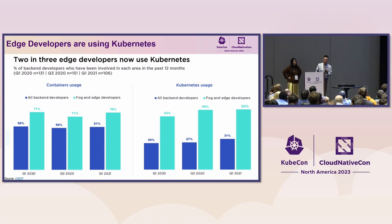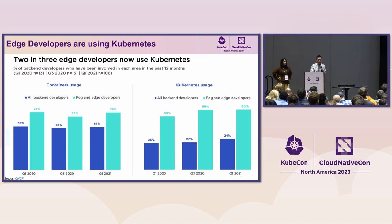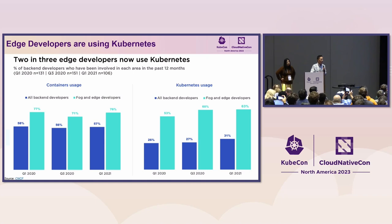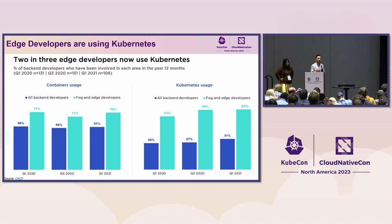Continuing on edge developers using Kubernetes — this is a survey done in 2021 by CNCF. It shows more than two-thirds of developers in the edge area are already using Kubernetes. We are doing a new survey in 2023, but you can definitely see the trend of why edge developers are choosing Kubernetes for the reasons Tina just outlined.